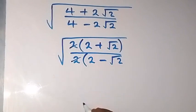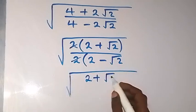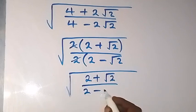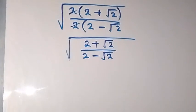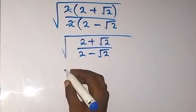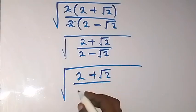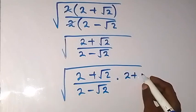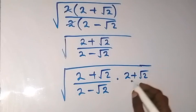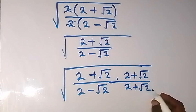The two's cancel each other. What we have, we can rationalize what is inside. This gives us square root of (2 plus root 2) over (2 minus root 2), then multiply by the conjugate, which is (2 plus root 2) over (2 plus root 2) — that means we have rationalized this.